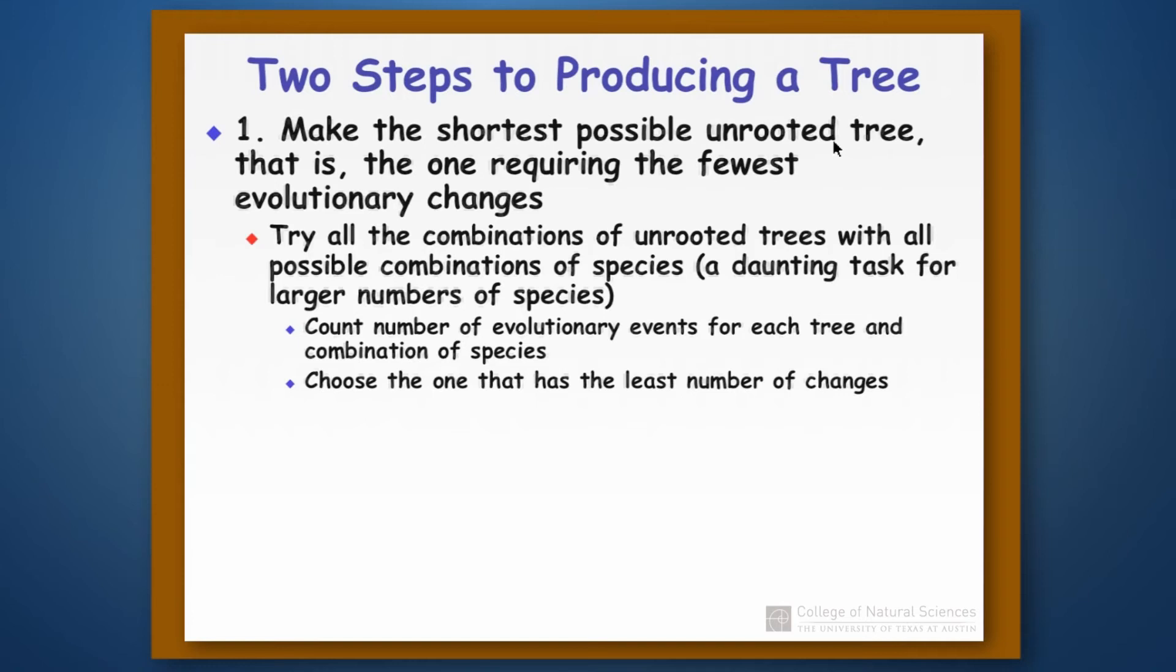We're going to try to make the shortest possible unrooted tree. The way that we do this is we try all the combinations of unrooted trees with all possible combinations of species. And this can get really big really fast. You should see my bonus video if you want to see why things grow so quickly. Basically what we're going to do is we'll go to each tree and we'll count the number of steps or evolutionary changes on it. Whichever one of those trees has the fewest number of steps or changes on it becomes the most parsimonious tree and that's the one that we choose.